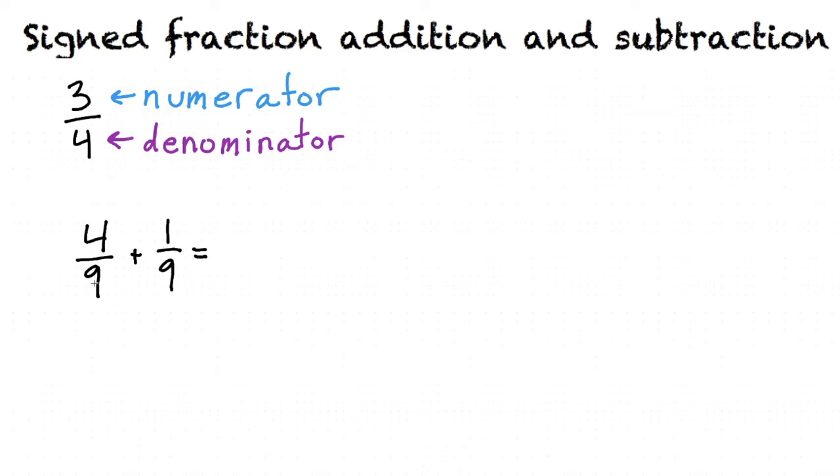These two fractions have the same denominator, 9, so to add them, we keep that denominator and add the numerators, in this case 4 plus 1, to get our final answer of 5 ninths.